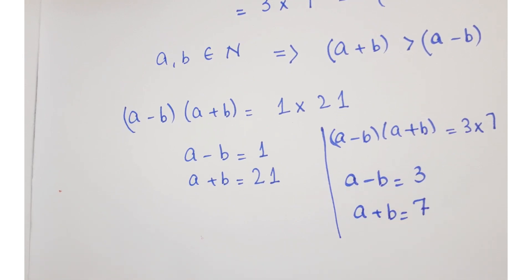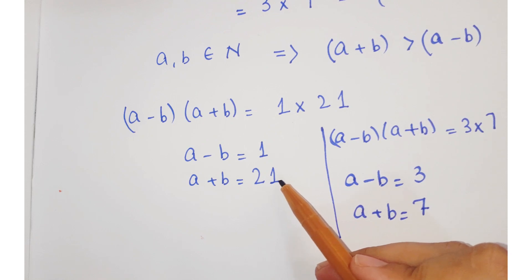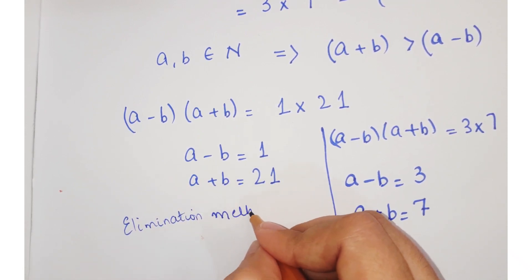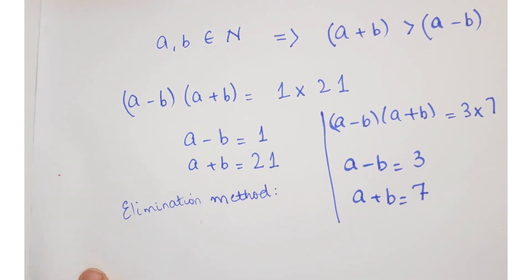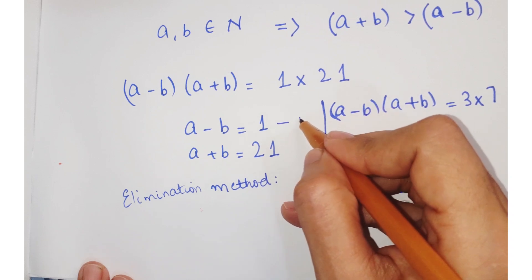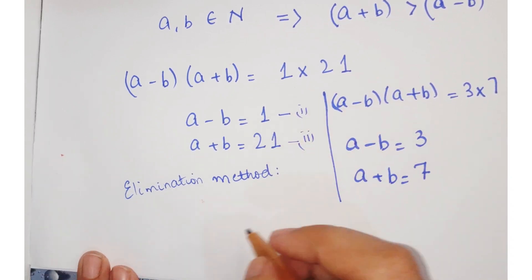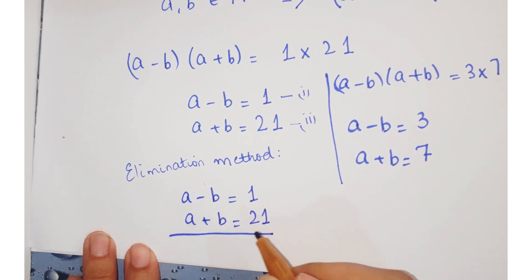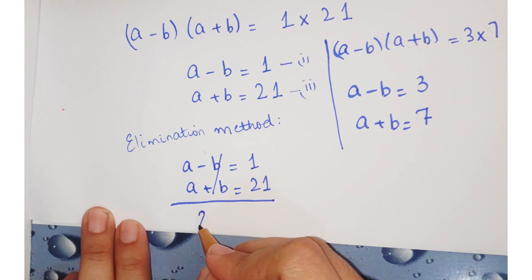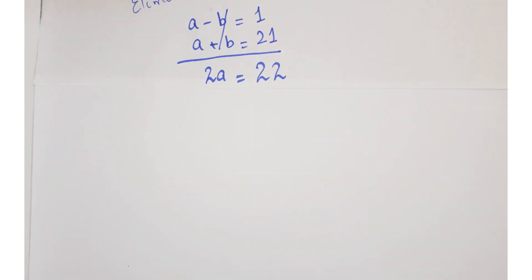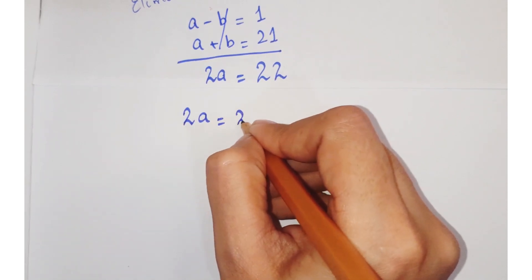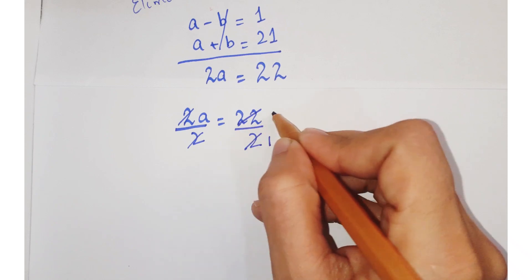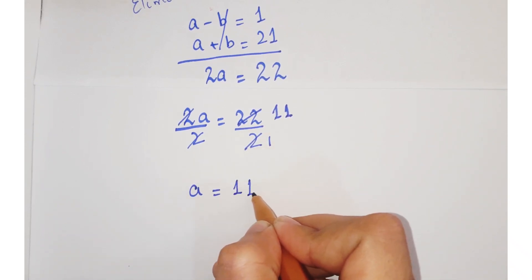For finding the values of a and b, we have a system of two equations with two variables. We can apply the elimination method. Calling the first equation equation 1 and the second equation 2, we just add them up. By adding, we get 2a equals 22. Dividing both sides by 2, we get a equals 11.